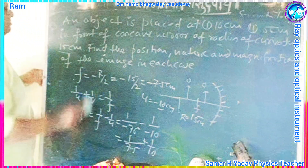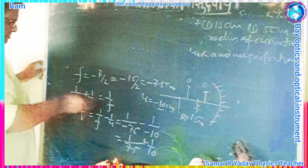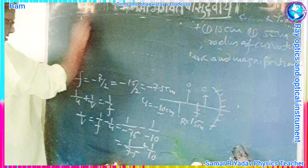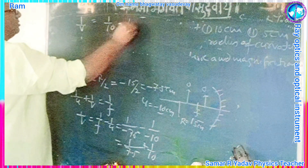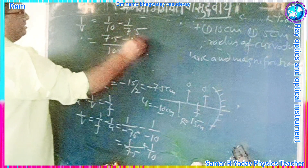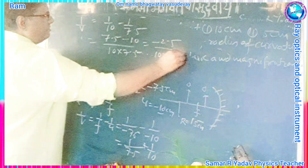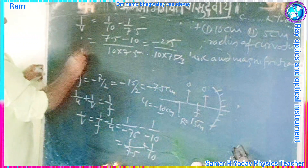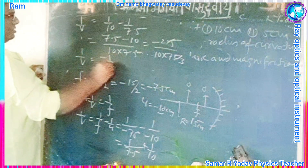Taking the LCM, 1 upon V is equal to 1 upon 10 minus 1 upon 7.5. The LCM is 10 into 7.5, giving 7.5 minus 10 equal to minus 2.5, divided by 10 into 7.5. So 1 upon V equals minus 1 upon 30, which implies V is equal to minus 30 cm.